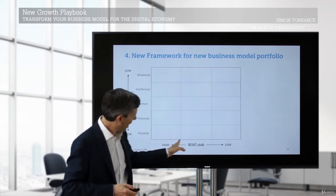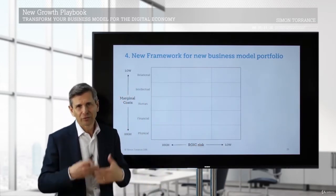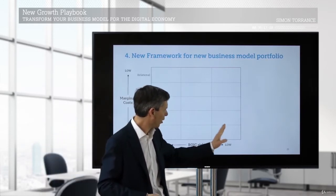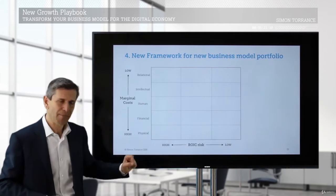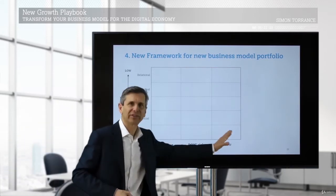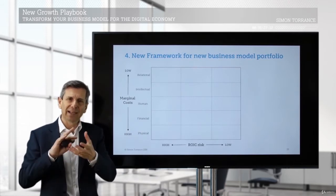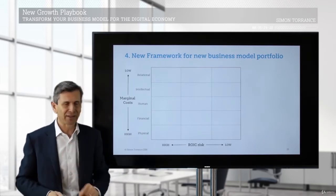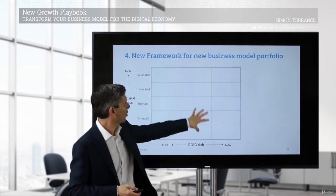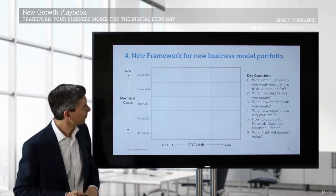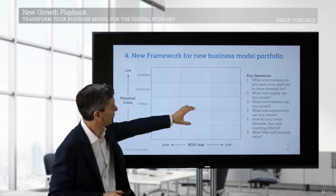On this axis we look at the return on invested capital risk, and of course you want to invest in things that are lower risk rather than higher risk. I'll show you some examples of how companies have reduced their risk by combining a portfolio in a synergistic way. But first, this framework may be useful for you to plot where you're currently placing your bets — and these are the key questions I suggest you consider.